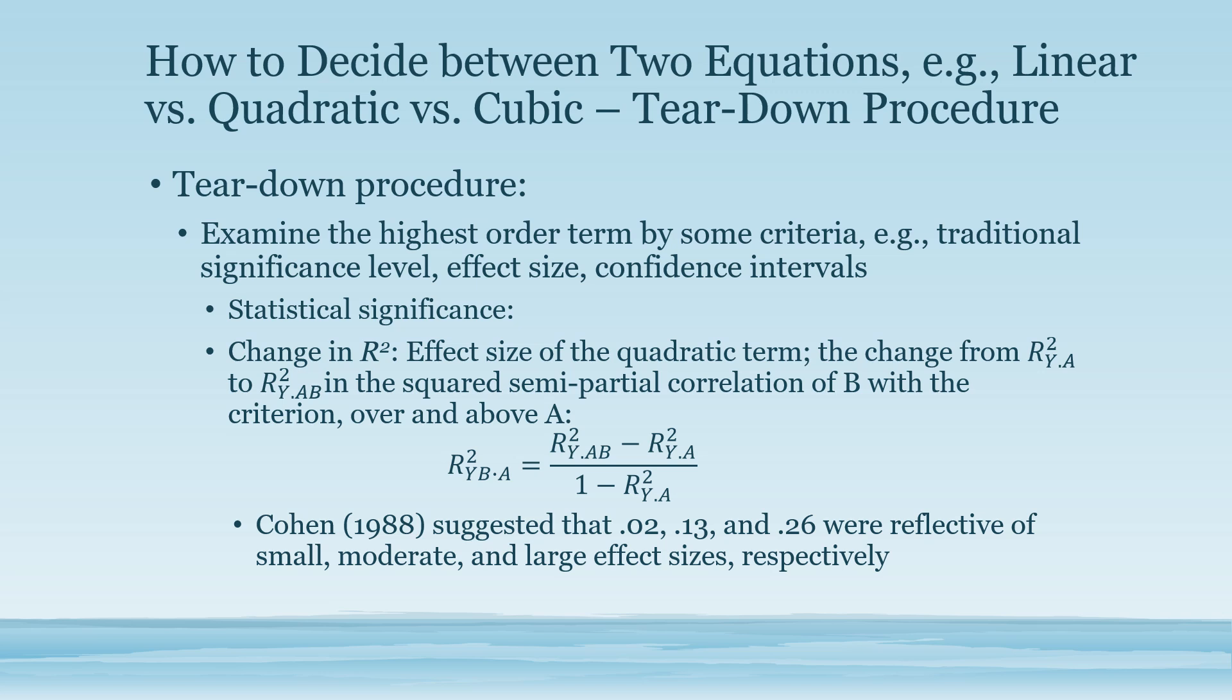This formula will tell us what additional variance is explained by the quadratic term, the power term. Then we can compare this effect size against the criterion set by Cohen. Cohen suggested that 0.02 suggests a small effect size, 0.13 suggests a moderate effect size, and 0.26 suggests a large effect size. If the effect size we found according to this formula is moderately high, then we should stay with the quadratic model instead of the linear model.